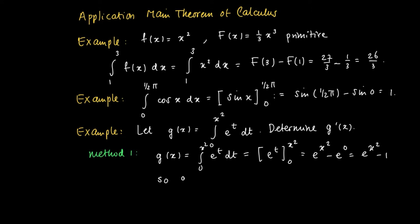So the derivative can be calculated directly by taking the derivative of e to the power x squared minus 1. We get e to the power x squared times the derivative of x squared, which equals 2x. So we get 2x times e to the power x squared, since the minus 1 vanishes.